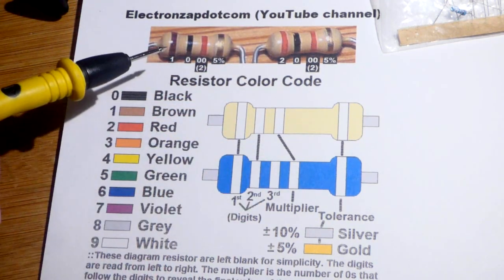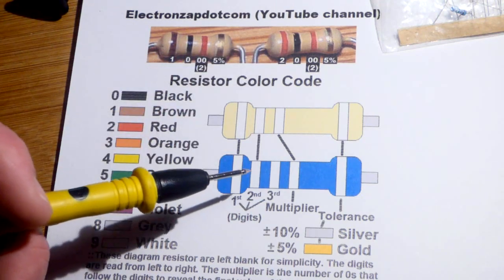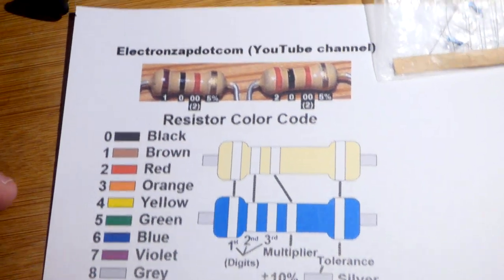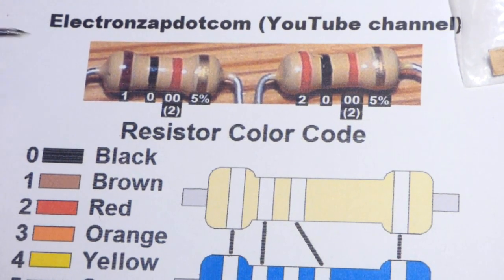And so you start from the left, and the first two are digits. With the blue one, the first three are digits. But you can see here, we can zoom in, and we'll look at some blue ones coming up, actual resistors.